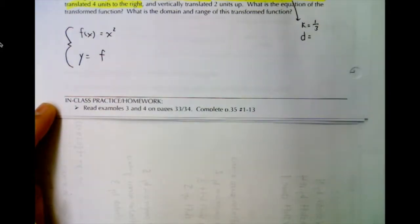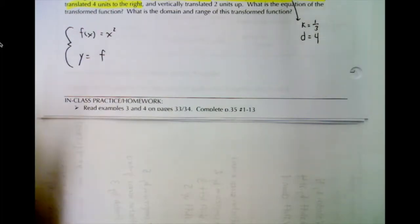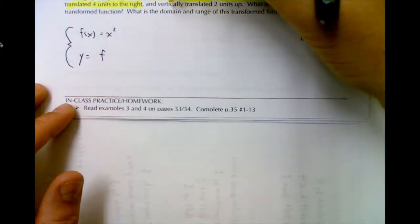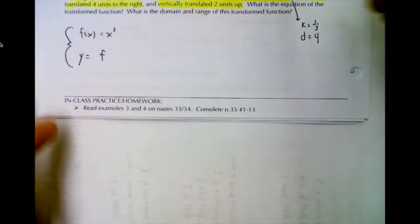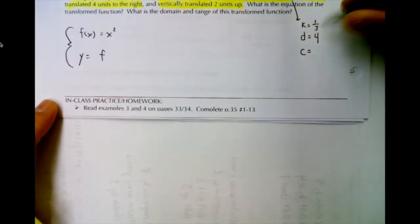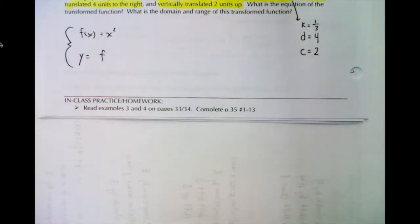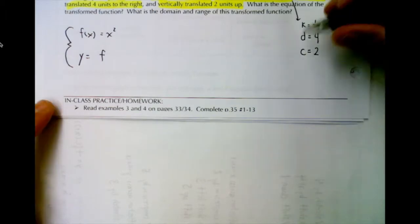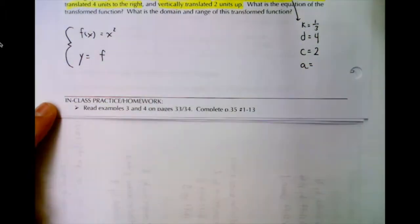So that's a shift to the right. d is our shifts to left and right, and since it's to the right it's positive four units. It's vertically translated two units up. That's referring to c, so c is two because it's up positive. And no more information about a, so we can assume a is one, but since it's reflected a is negative, so a is negative one.